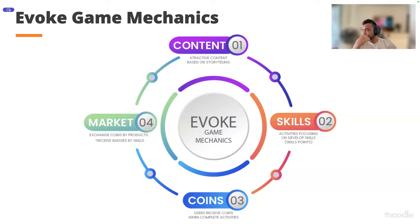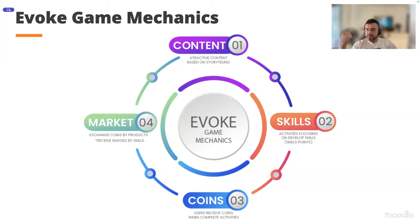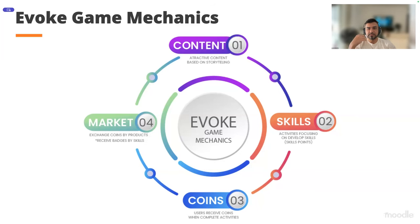We developed a simplified skills mechanism — similar to Moodle competency skills but simplified. Inside each course, which we call a campaign, we create the skills that will be developed, like innovation, creativity, and a single goal. When students complete activities, they receive points for these skills. Students can also receive coins when they complete activities, and these coins can be exchanged for products inside the marketplace. So we have skill development, coins, and a marketplace where users can exchange their coins for products — digital assets like a book, or physical assets like a badge, shirt, or pencil.